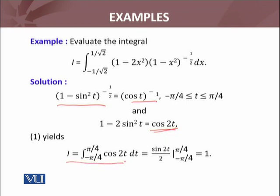My integral I, which I have to evaluate, becomes the integral from minus pi by 4 to pi by 4 of cos(2t) dt. I know that the integral of cos(2t) is sin(2t) divided by 2. If I evaluate at the limits, it turns out to be 1.